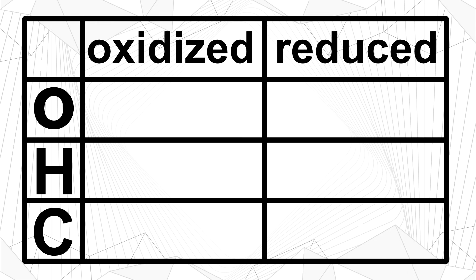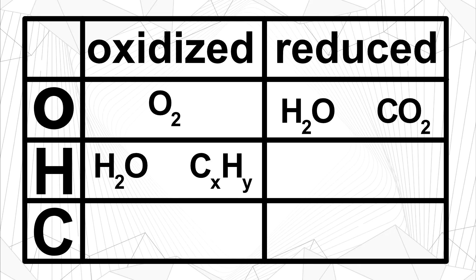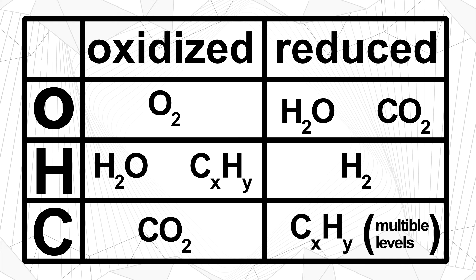There are three elements that we want to take a look at: oxygen, hydrogen, and carbon. Oxygen is oxidized or low on electrons in the form of oxygen gas, while it is reduced in both water and CO2 molecules. Hydrogen is oxidized while in water or hydrocarbons, but is reduced as hydrogen gas. Carbon is oxidized in the form of CO2, but is reduced in the form of hydrocarbons. For carbon atoms, there are several different levels of how many electrons they can have.